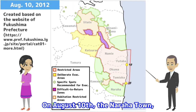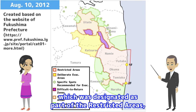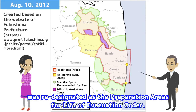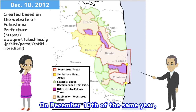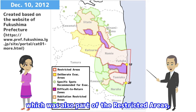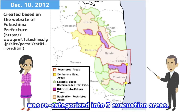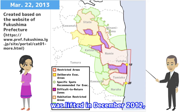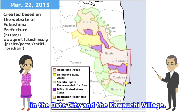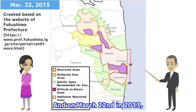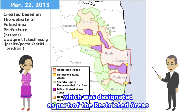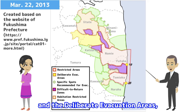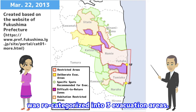On August 10, Naraha town, which was designated as part of the restricted areas, was re-designated as the preparation areas for lift of evacuation order. On December 10 of the same year, Okuma town, which was also part of the restricted area, was re-categorized into three evacuation areas. The designation as specific spots recommended for evacuation was lifted in December 2012 in Date City and Kawauchi village. And on March 22, 2013, Katsurao village, which had been designated as part of the restricted areas and the deliberate evacuation areas, was re-categorized into three evacuation areas.